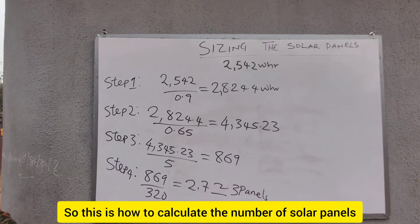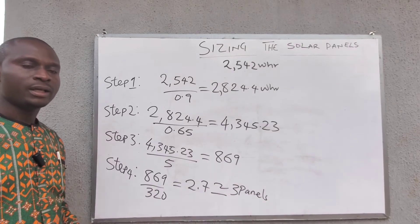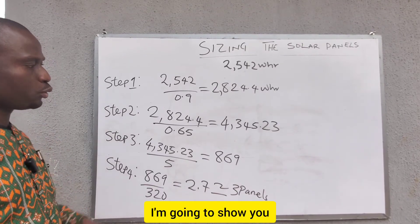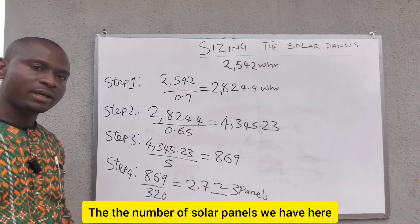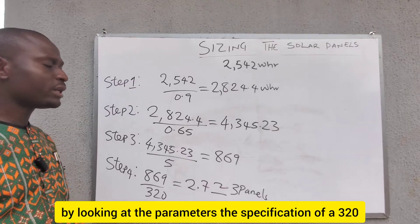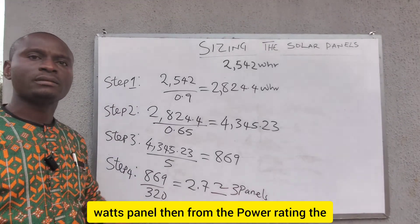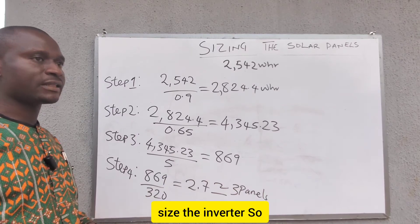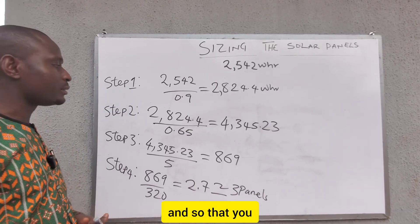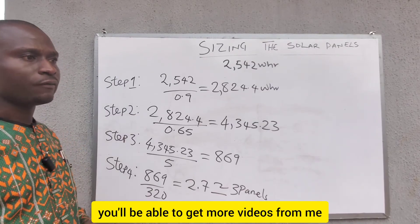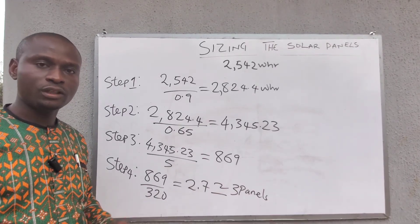This is how to calculate the number of solar panels needed to generate the energy that will be stored in your battery. In my next video, I will show you how to size the charge controller and the inverter using the number of solar panels we have here, looking at the specifications of a 320W panel. If you enjoyed the video, please subscribe to my channel and turn on your notifications. Thank you very much for watching — see you in my next video.